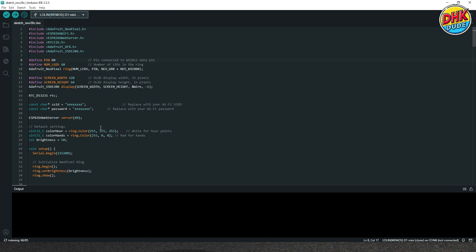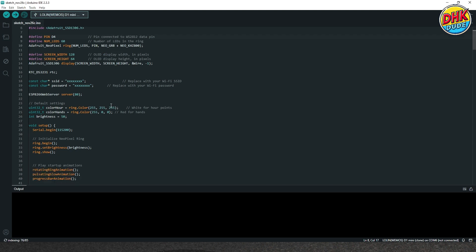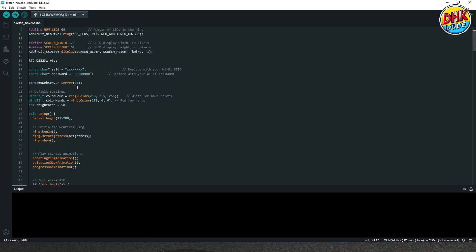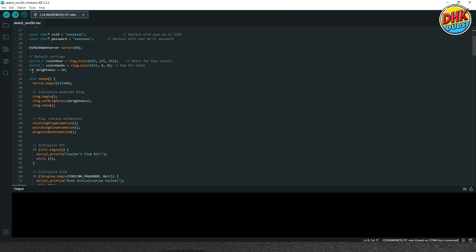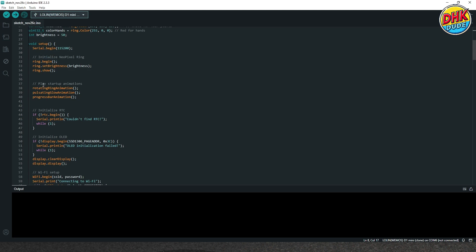Here is the resolution defined of the OLED screen. Here in this part, you have to enter your Wi-Fi credentials. In this section, we have default colors of the digits and hands. And from this section, we are initializing NeoPixel ring. Here we have some exciting animations on the boot of the ring.